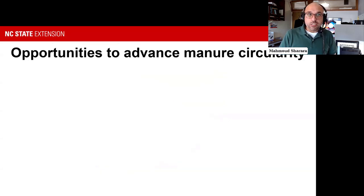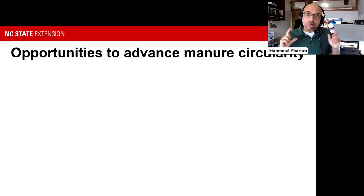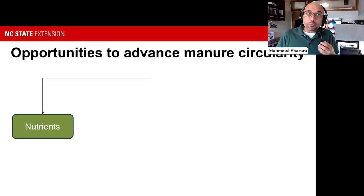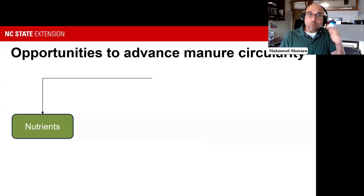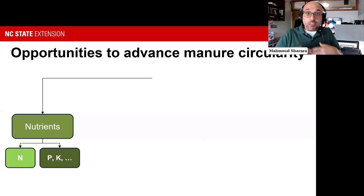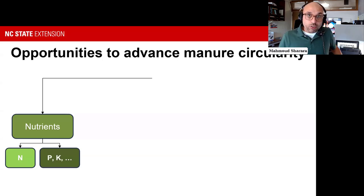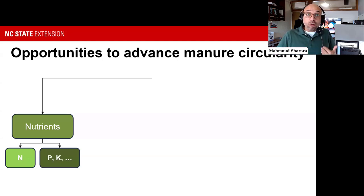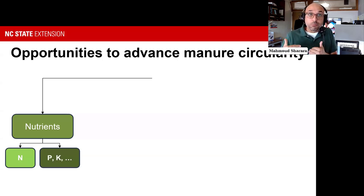As we transition to what our opportunities are to improve circularity, we need to be clear on what we're talking about. We could be talking about nutrients, and even within nutrients, we recognize that nitrogen is highly volatile—its management on agricultural land is essentially year by year—while more conserved nutrients like phosphorus can build up over long periods of time and require a long-term strategy to be sustainable.